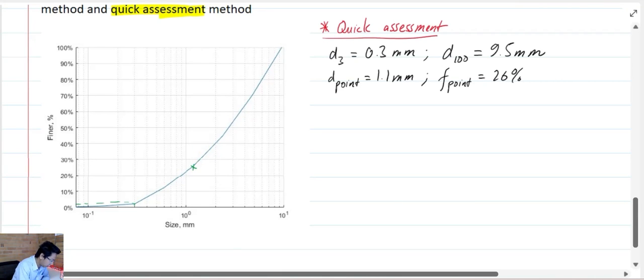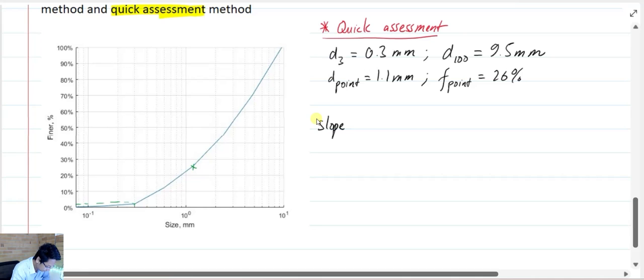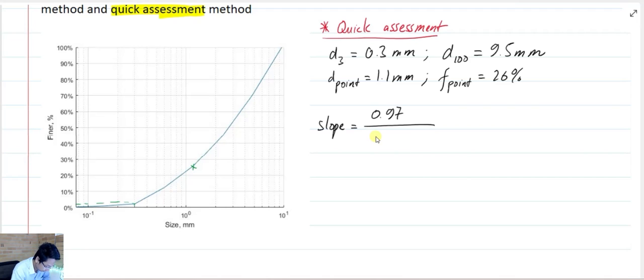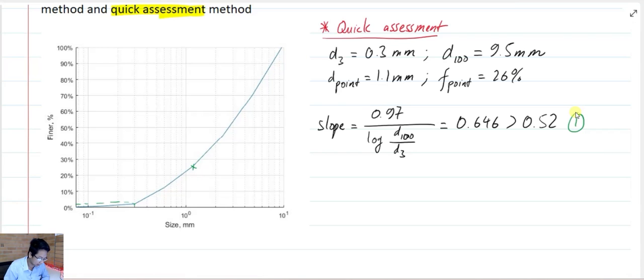Now we need to calculate the slope and the bending factor to check with the critical value. So my slope is equal to 0.97 over log 10 of D100 over D3. This is the mean slope. And I have this one equal to 0.646, and it is larger than the critical slope 0.52. So this is the first condition and it is okay, because the particle size distribution is steeper than the normal slope, the critical one.